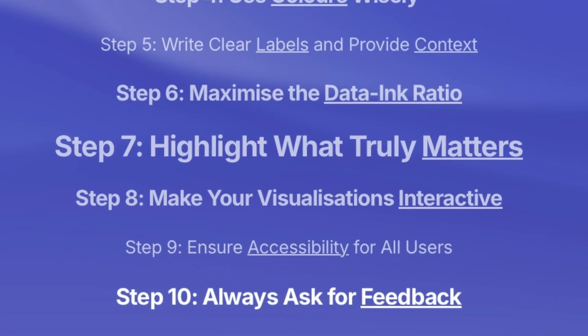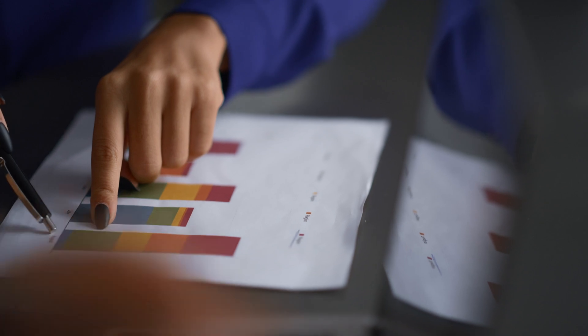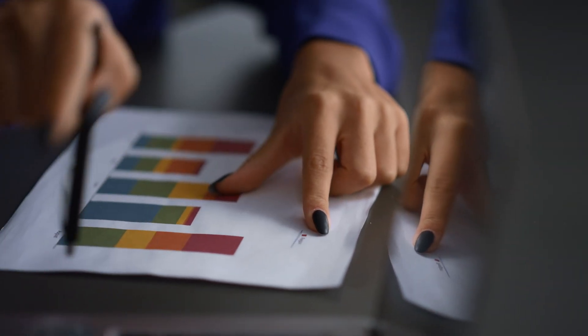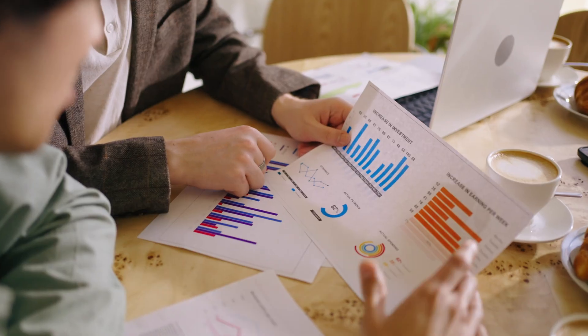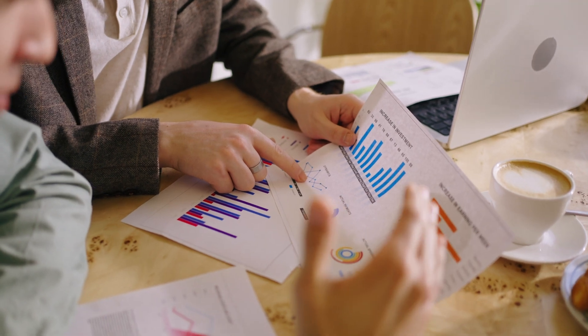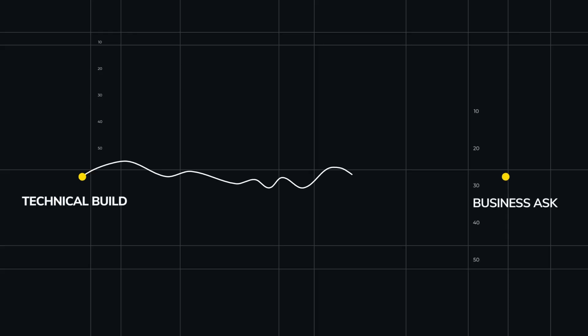And last but not least, step ten: always ask for feedback. Your visualization is only as good as the insights your audience can gain from it. The easiest way to improve your visuals is simply to ask for feedback on what's working and what's not. Make sure you keep on iterating based on the feedback you get — good or bad — by closing these feedback loops. You are guaranteed to improve your visuals over time as you align the technical build with the business ask.